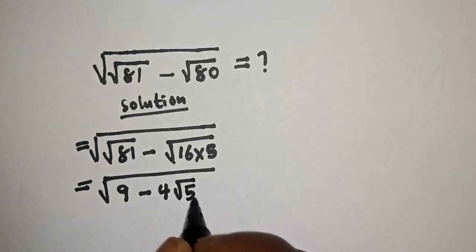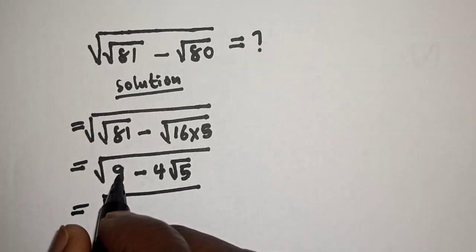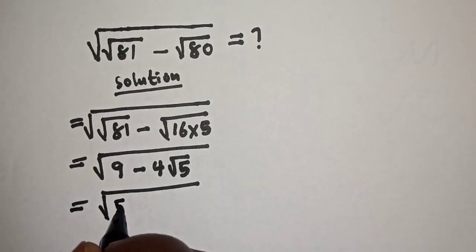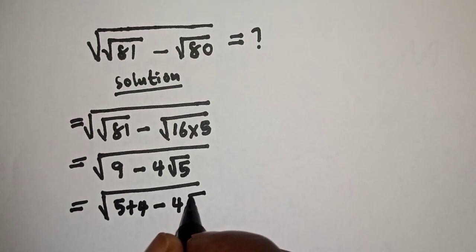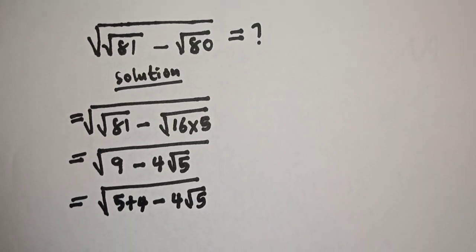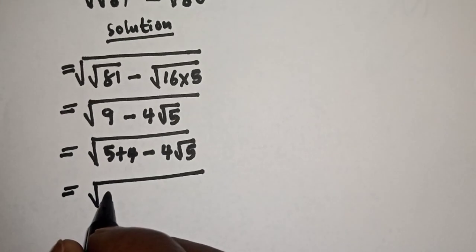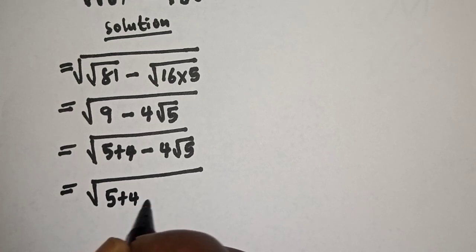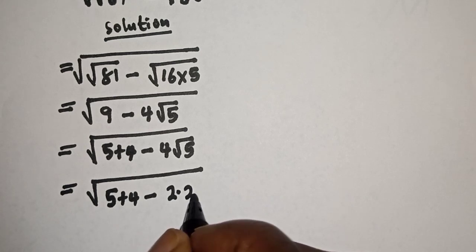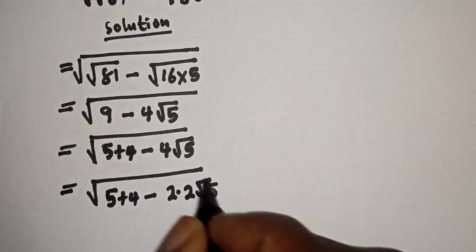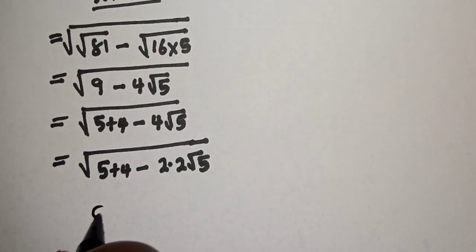This is equal to square root of (square root of 9). Now 9 can be written as 5 plus 4, minus 4 root 5. Then this is equal to square root of (5 plus 4 minus 4 root 5). This 4 can be written as 2 multiplied by 2 root 5, giving square root of (5 plus 4 minus 2 times 2 root 5).